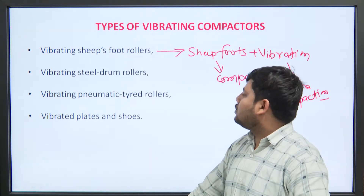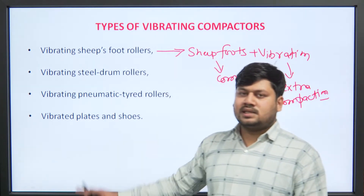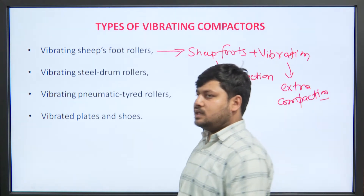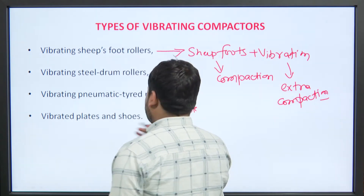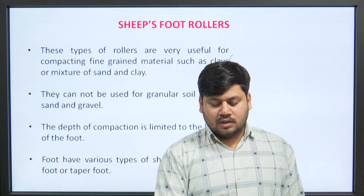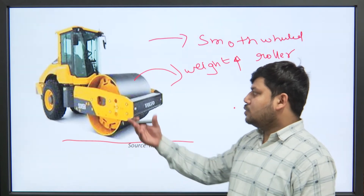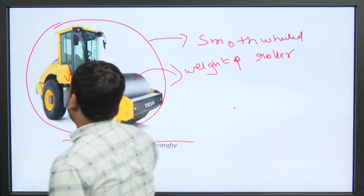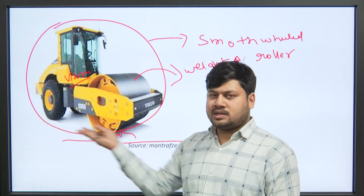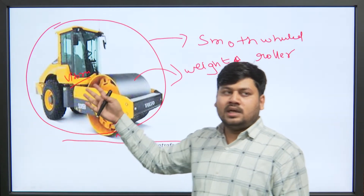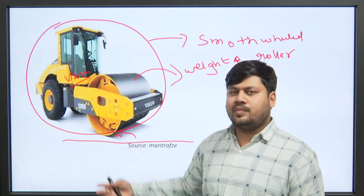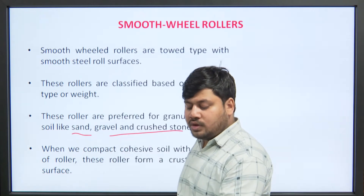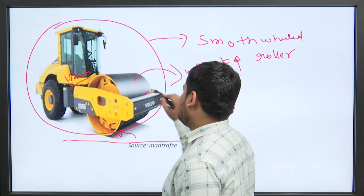Another type of vibrating compactor is the vibrating steel drum roller. It is a simple steel drum in which a vibrator is inbuilt, so it can produce extra compression using the vibrator. When the vibrator is switched on, it provides extra vibration and can be used for extra compression of the soil. Using a vibrator with a steel drum also allows it to work on cohesive types of soil.